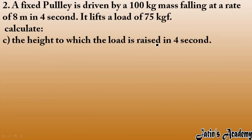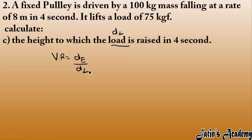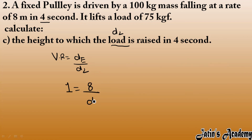Next, we calculate the height to which the load is raised, i.e., the displacement of load. We know velocity ratio equals displacement of effort over displacement of load. For a single fixed pulley, velocity ratio is 1, and displacement of effort is 8 meters. Cross-multiplying gives displacement of load as 8 meters. This is our answer.